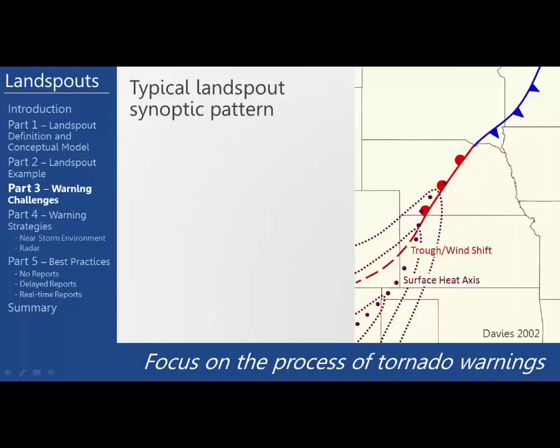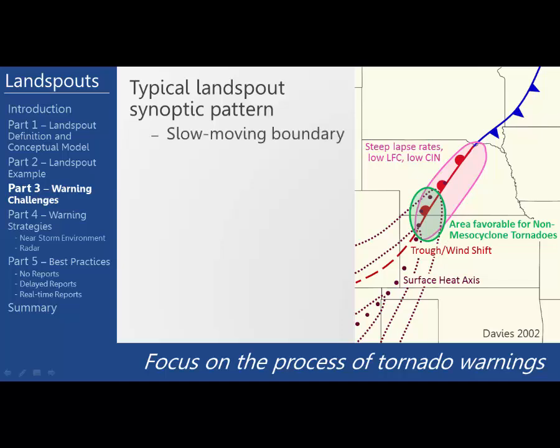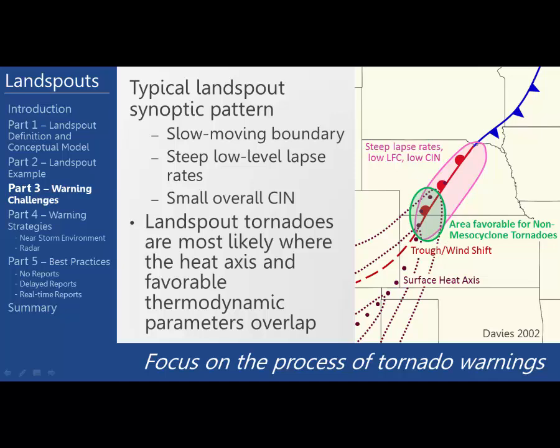This is a modified version of literature from Davies in 2002. The surface heat axis is indicated by the dotted maroon lines. The trough wind shift is indicated by the red dashed line. The area of steep low-level lapse rates, low LFCs, and low SIN is highlighted by the pink shaded region. The juxtaposition of these three ingredients is circled in the green shaded region — this is the area most favorable for landspout tornadoes. In summary, there is a slow-moving boundary with steep low-level lapse rates and small overall SIN, and landspout tornadoes are most likely where the heat axis and favorable thermodynamic parameters overlap.